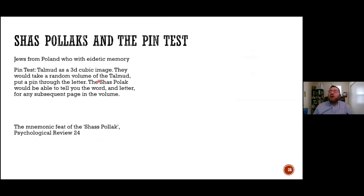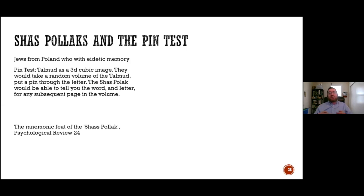Another example is the cultural phenomenon called the Shas Polak. Shas is another term for the Talmud. A Shas Polak was a Jew, often from Poland, who presumably had an eidetic memory and would perform the following trick called the pin test: somebody would open a volume of the Talmud to a random page and put a pin through it through a random letter, and then for any subsequent page in the Talmud, the Shas Polak would be able to tell you the letter and word through which the pin went. This is a way of envisioning the images of the text almost as a 3D cube of text.